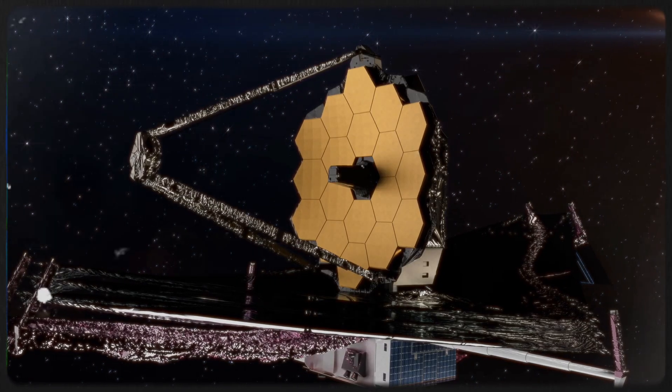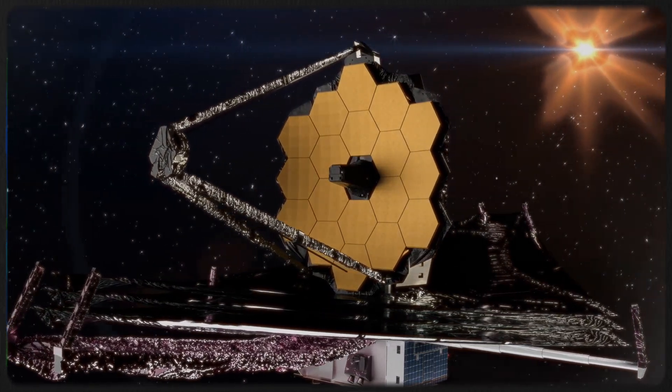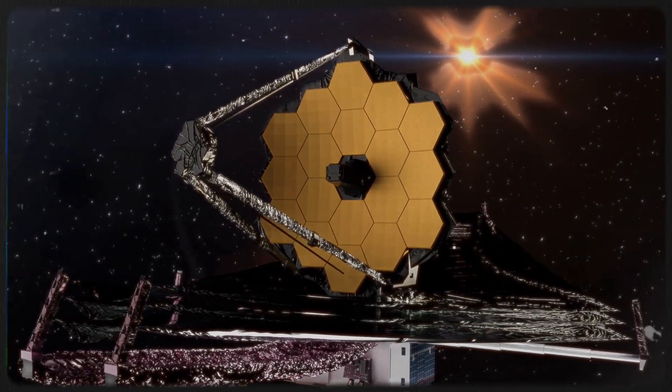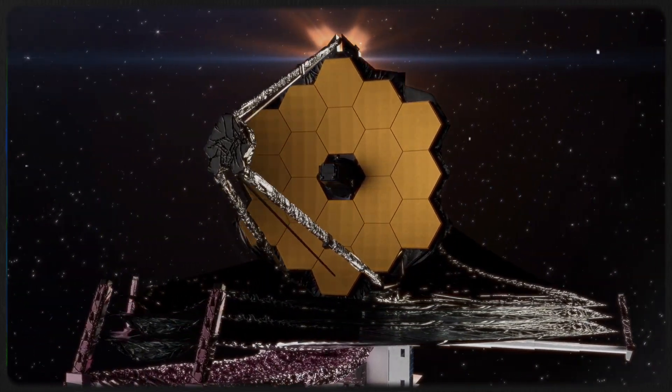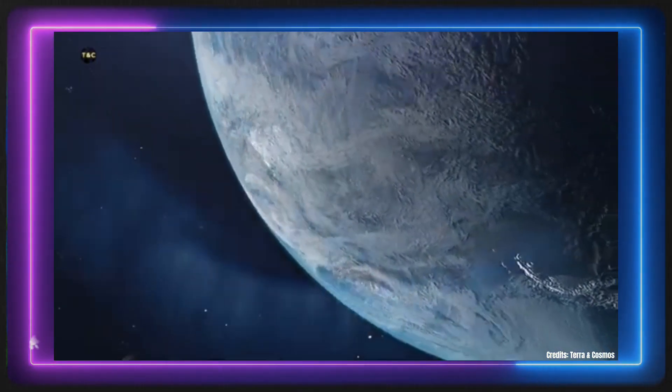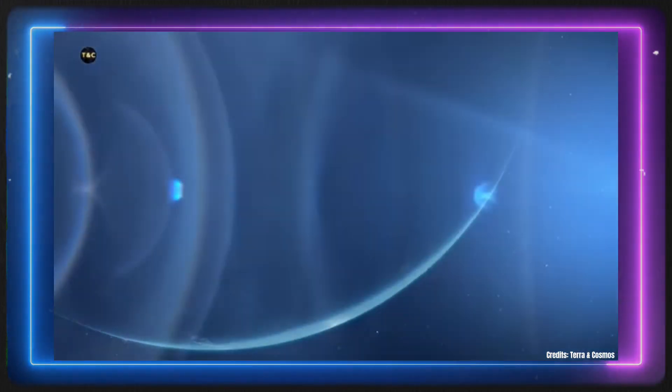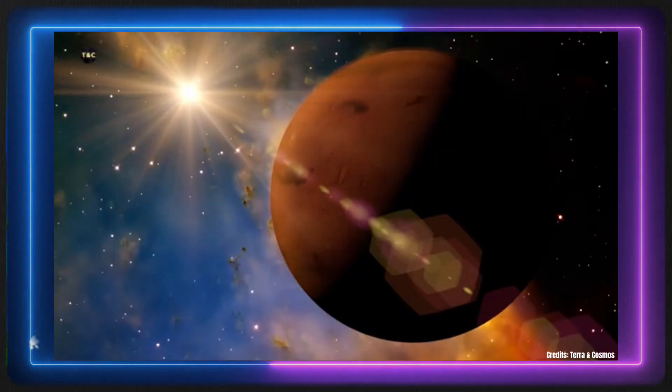The James Webb Space Telescope, the most advanced telescope ever built, is 100 times more powerful than its predecessor, allowing us to uncover the mysteries of the vast cosmos. In the past, we've discovered a wide variety of planets, from small rocky worlds to gas giants larger than Jupiter, as well as extremely hot, uninhabitable planets.